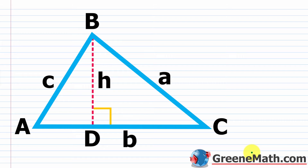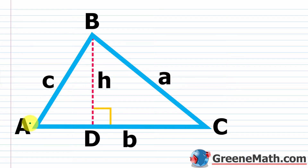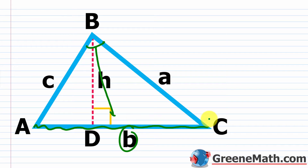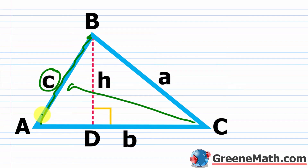I'm going to start off with this acute triangle, which we'll call ABC. The capital letters A, B, and C are your angles. The lowercase letters are the sides across from their corresponding capital letter angle. So angle A is across from side a, angle B is across from side b, and angle C is across from side c. You need to understand how this is named because pretty much in every book, this is how they'll do it.